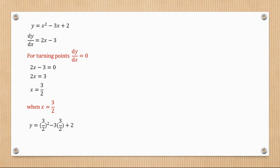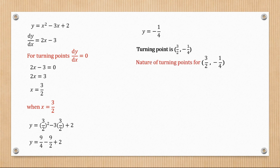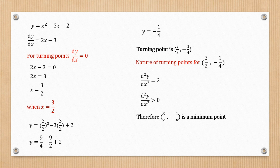When x = 3/2, substituting back gives y = -1/4, so the turning point is (3/2, -1/4). To determine the nature, we find the second derivative, which equals 2. Since 2 > 0, this is a minimum point.